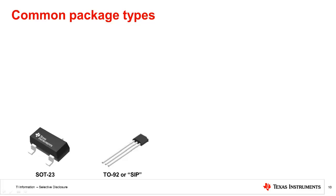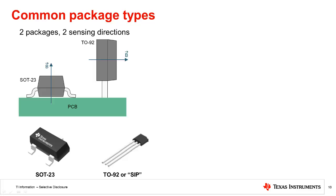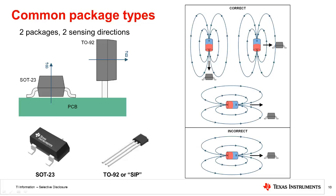SOT-23 and TO-92 packages are industry standard packages. Most Hall sensors are sensitive to magnetic fields that are perpendicular to the face of the package. Once soldered onto the PCB, the two packages offer two different sensing directions. A correct magnet approach must be used for the sensor to detect the field. The correct and incorrect approaches are shown here.